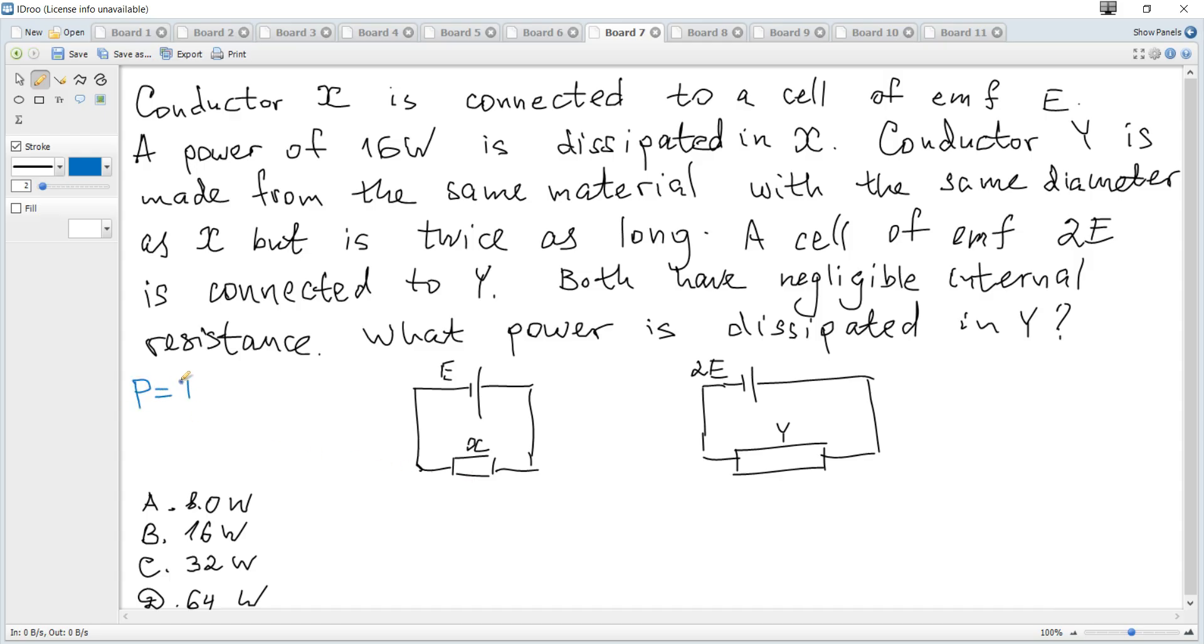What are formulas for power? It's current times voltage or current squared times resistance or voltage squared over resistance. And since length is involved we know that resistance is resistivity, length divided by cross-sectional area.